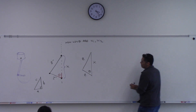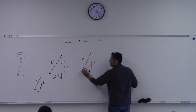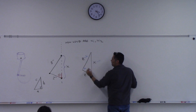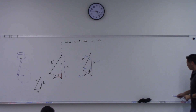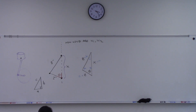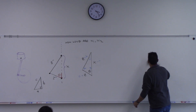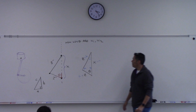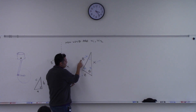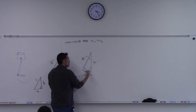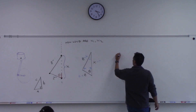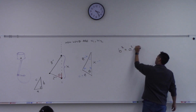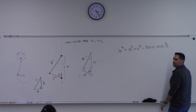Let's say this side is little a, making the opposite angle capital A. This is little b with capital B, and this is c with capital C. For law of cosines, use B squared because the opposite angle we have is theta and we have the two adjacent sides. So B squared equals A squared plus C squared minus 2 times A times C times cosine of B. That's the formula.